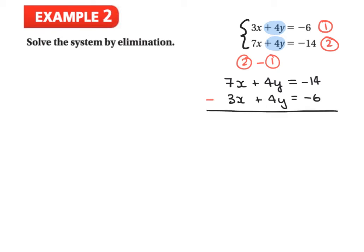Subtracting term by term: 7x minus 3x gives 4x. Then 4y minus 4y gives 0, so y is eliminated. For the constants: negative 14 minus negative 6 is like negative 14 plus 6, which gives negative 8. So 4x equals negative 8. Dividing both sides by 4, we get x equals negative 2.